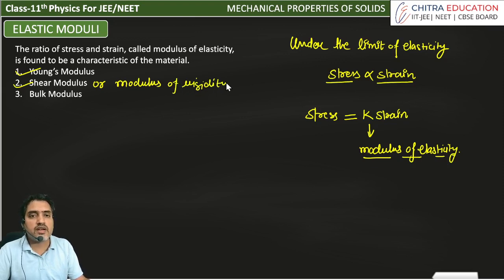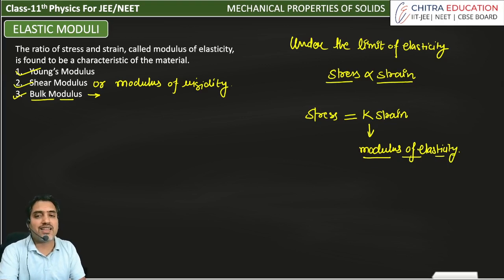So here we have a third category of bulk modulus, and this is for volumetric strain and stress. We have basically three categories: first is Young's modulus, second is shear modulus, third is bulk modulus. And we will derive different relations because the numerical is based on these.